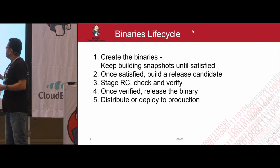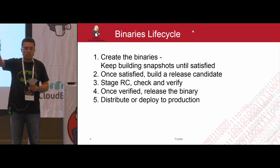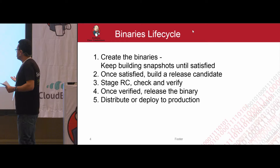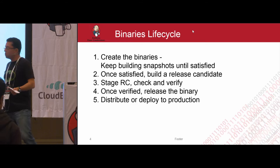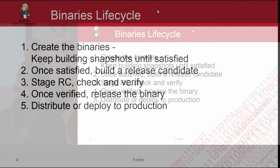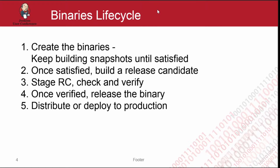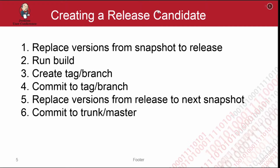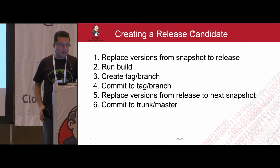In a minute, we're going to show how it's done from Jenkins. Once we have a release candidate, we want to stage it — put it in a staging environment, in a staging repository in Artifactory, so that it can be verified to know whether it's good to be released. Once verified, we want to release the binary to production and eventually distribute or deploy it to the production machine. That's the basic lifecycle of a binary. Jenkins with the Artifactory plugin provides a release platform — a release feature that is going to do the following for you.